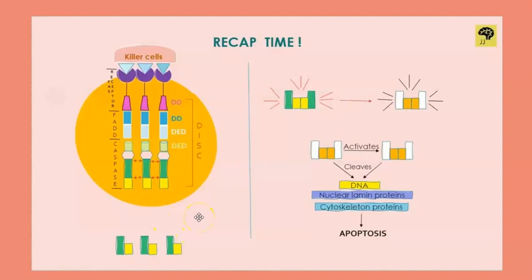The initiator caspases involved here are number 8 and 10 — remember that. Once active, they go and cleave executioner caspases. When active, executioner caspases can either go and cleave other executioner caspases to make them active, or they can cleave the target proteins which provide structure to the cell and its organelles. If the structure of the cell is lost, apoptosis is happening.